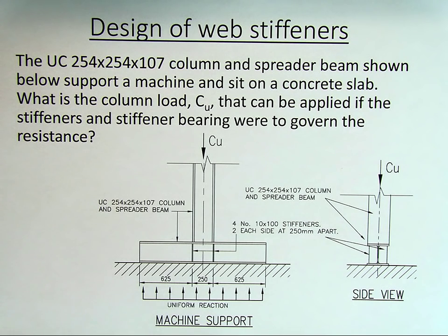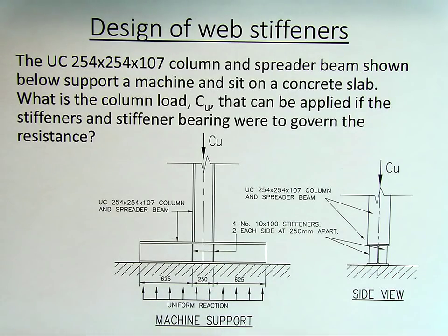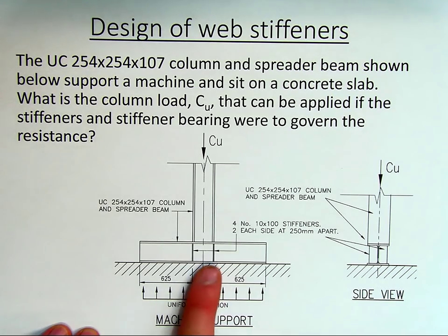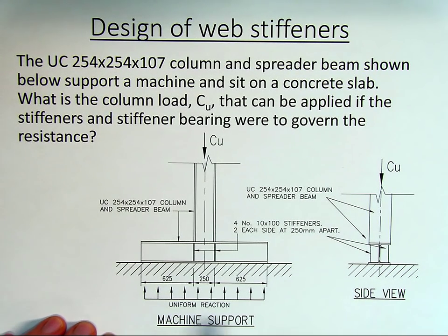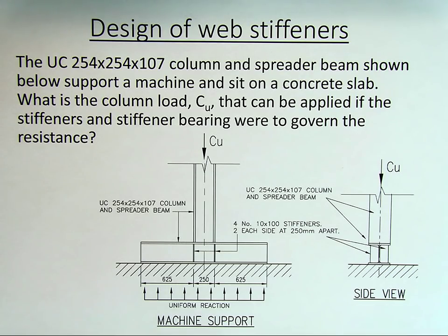We have a column pushing down a load onto a beam sitting on a concrete slab, spreading out the load. We need to check if the stiffeners and the bearing capacity of the stiffeners are sufficient for carrying the load — there are two stiffeners each side, 10 by 100mm stiffeners. The forces we calculate will be in excess of what you would normally see such a setup carrying; this would be for fairly light loads. If you have high loads with a spreader beam, you want to connect it to a base plate or foundation rather than just sitting on a floor, but it's a useful example for illustrating the design process.